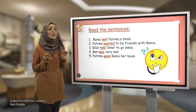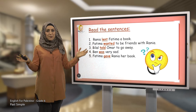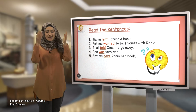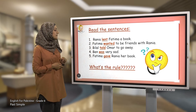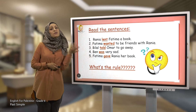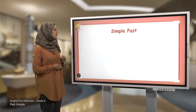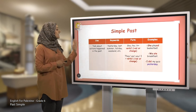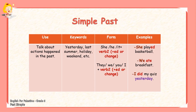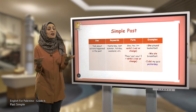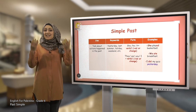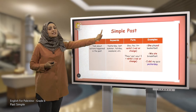Fatima gave Rania her book. As you can see, all these verbs — lent, wanted, told, was, and gave — are all in the past simple. They are all actions that happened in the past. Now, how do we form the past simple or the simple past? We use the simple past to talk about things that happened in the past — yesterday, last summer, last holiday, or at the weekend. When we want to talk about what we did in the past, we should use the simple past.